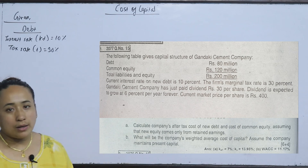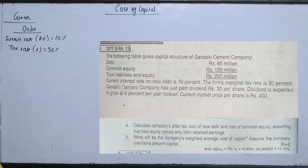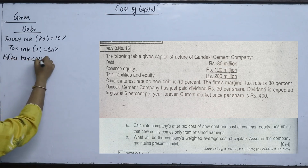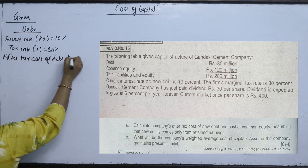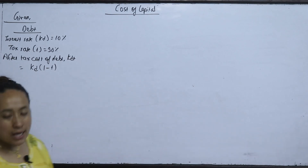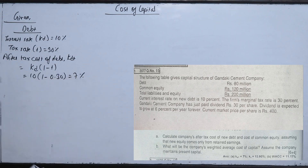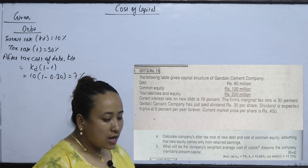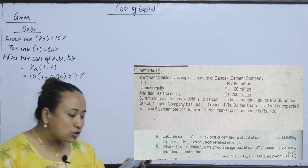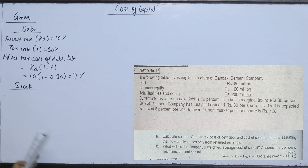We will calculate the after-tax cost of debt, which is KDT. KD is 10% and the tax rate is 30%.